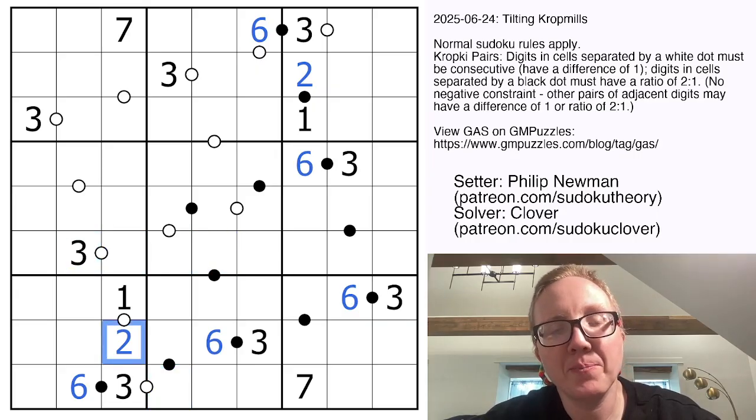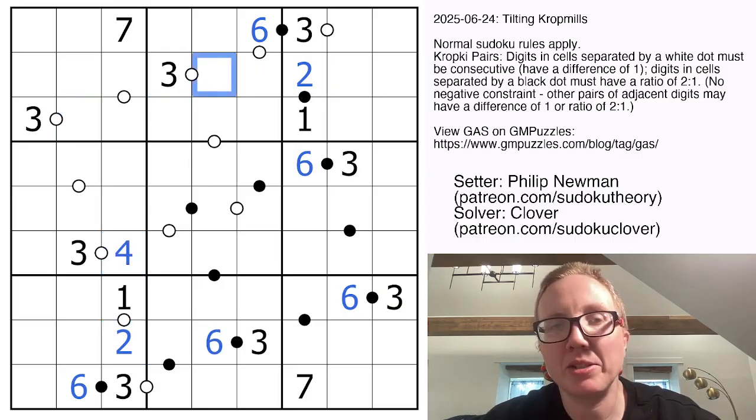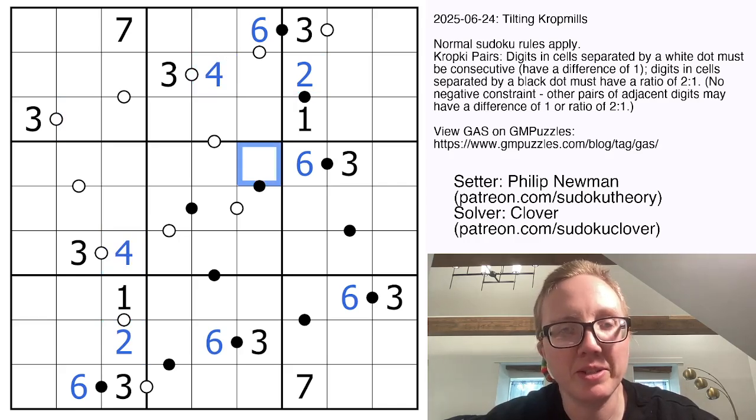Three is next to either 2 or 4, but there's already a 2 in the column, so that's going to be a 4. And then same here, there's already a 2 in the row, so that has to be a 4 to go next to the 3.